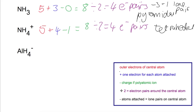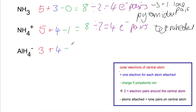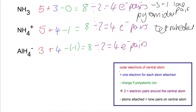Finally, looking at aluminium hydride, AlH4-. Aluminium has three outer electrons. We have four atoms attached and a charge of minus one, so we do minus minus one. That gives eight electrons in total. Dividing by two gives four electron pairs. With four things attached, there are no lone pairs, so the shape of this molecule is also tetrahedral.